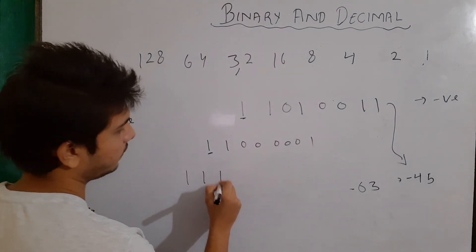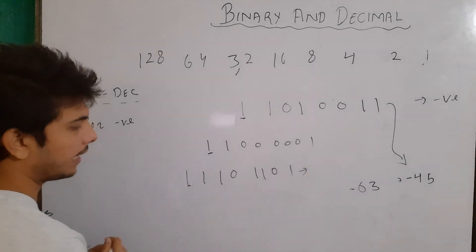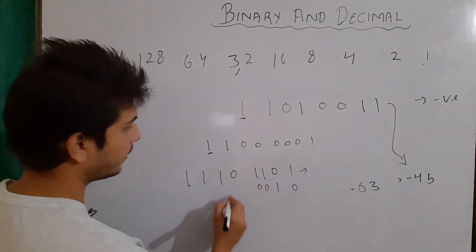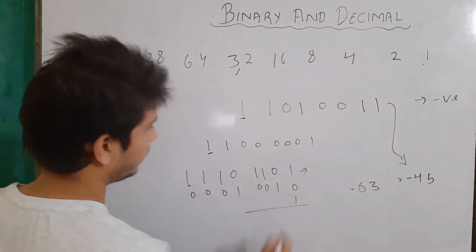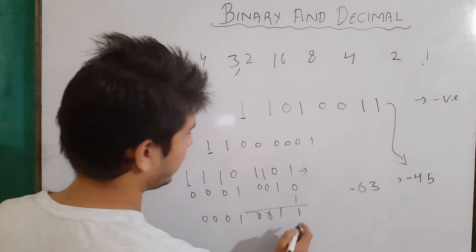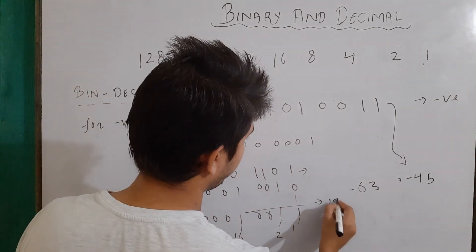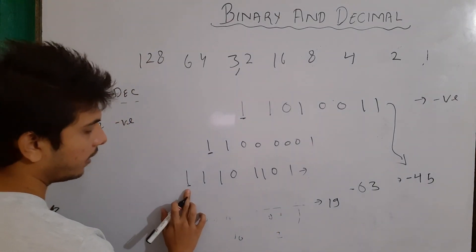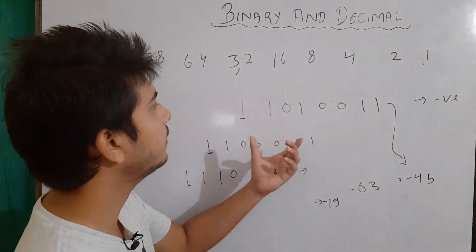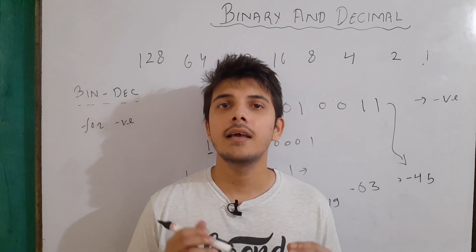Let's take one more example: 1 1 1 0 1 1 0 1. Since the leading bit is 1, the number is negative. We find its one's complement and then add 1 for the two's complement. Then finding the decimal equivalent: 16 plus 2 plus 1 equals 19, so the decimal equivalent is minus 19. That's all about today — I hope you liked the video. If you have any doubt please comment it down. Thanks for watching and I hope to see you in the next video.